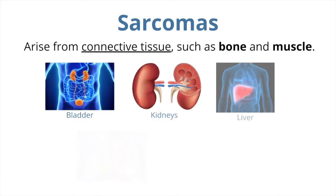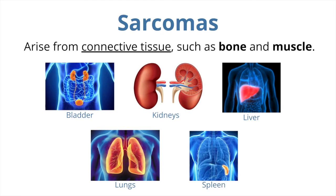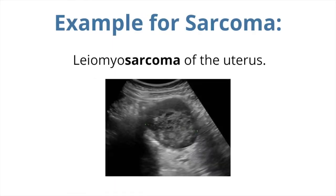Sarcomas. The word sarx means flesh in Greek, and OMA means tumor. Sarcomas are also solid tumors and originate from connective tissue such as bone and muscles. Sarcomas can also form in the surrounding tissue of several major organs such as bladder, kidneys, liver, lungs, and spleen. An example of sarcoma is leiomyosarcoma of the uterus.